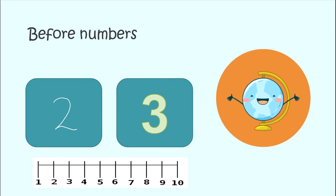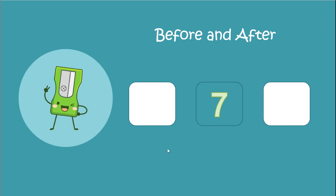Before and after numbers. So we have the number 7. When we're counting, what number comes after 7? 1, 2, 3, 4, 5, 6, 7, 8 — so that's our counting pattern. 6 comes before 7, and 8 comes after: 6, 7, 8.